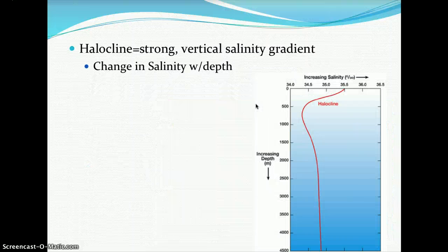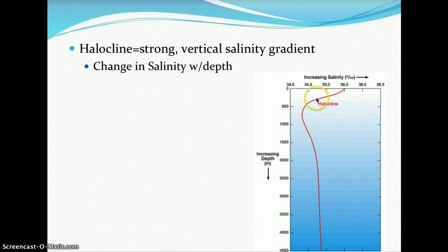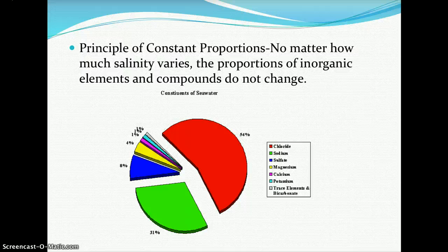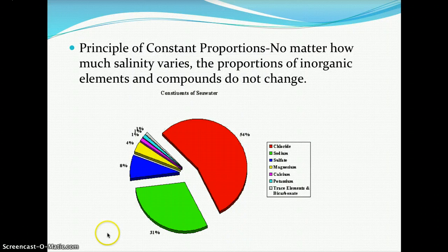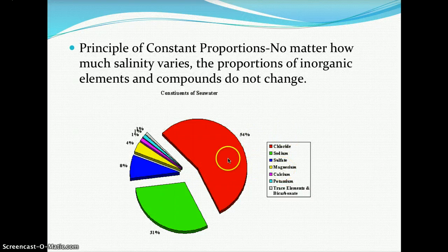This variation creates a halocline — a strong vertical salinity gradient showing changes in salinity with depth. At about 500 meters depth, salinity drops from 35.5 to just below 34.5, then increases again around 1,000 meters, extending down to 4,500 meters. The principle of constant proportions states that regardless of how much total salinity varies, the proportions of inorganic ionic elements do not change. The major constituents of sea salt are chloride (54%), sodium (31%), sulfate (8%), and magnesium (4%).